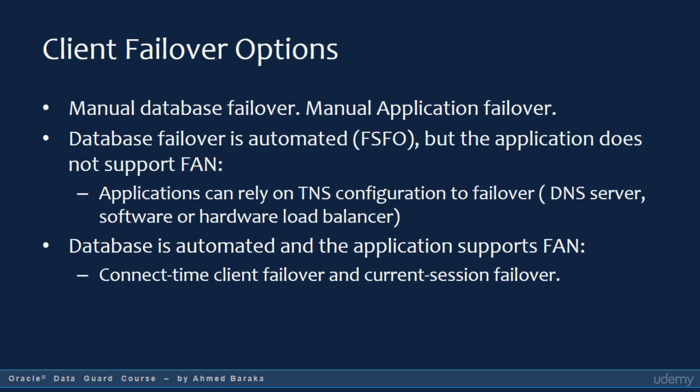When you plan for application failover, at a high level you have one of three solution options. The first option is to do the whole procedure manually. When you are notified about the production database failure, you, as a DBA, manually failover to the best standby database, configure the application servers to connect to the new primary database, and restart the application servers. This procedure is usually simple — you open a file or two, change the connection settings, and restart some services. However, some business applications don't accept this option because it includes a lot of delay, and an automatic procedure is required.